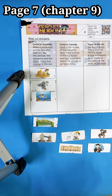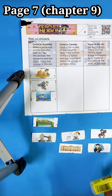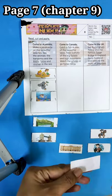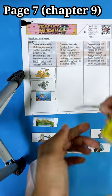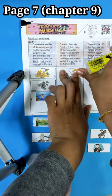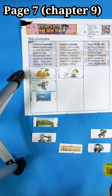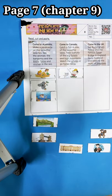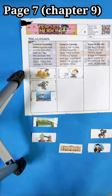Come to Canada. Catch a fish. Yes, we have it here. Catch a fish. We have beautiful lakes. Take a photo. Any take a photo? No.